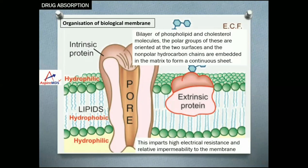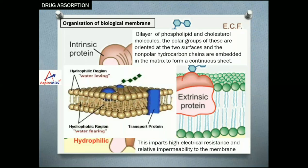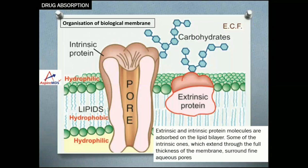To understand the structure of the cell membrane: the cell membrane consists of a bilayer of phospholipid and cholesterol molecules. The polar or hydrophilic parts are oriented at the two surfaces and the non-polar hydrocarbon chains are embedded in the matrix to form a continuous sheet. This imparts high electrical resistance and impermeability to this membrane. The hydrophilic water-loving parts are on the outside and the inner hydrocarbon parts are hydrophobic. This membrane also has extrinsic and intrinsic protein molecules absorbed in the lipid layers. Some intrinsic ones that extend through the cell membrane consist of aqueous pores.